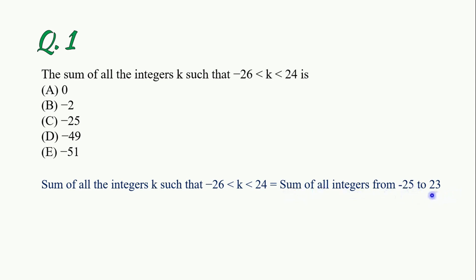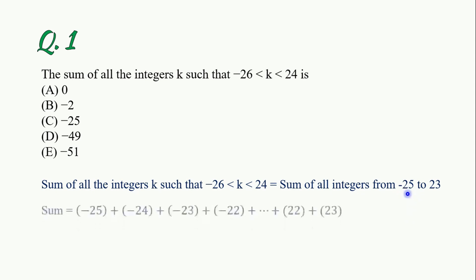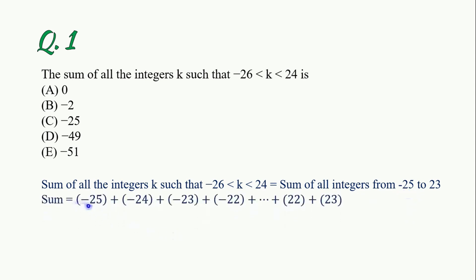The integers go up to 23. If you want to add minus 26, then minus 25 is paired with 25. So what we need to add is: minus 25 plus minus 24 plus minus 23, and we need to add minus 2, minus 1, 0, plus 1, plus 2, plus 3, dot dot dot, up to 23.